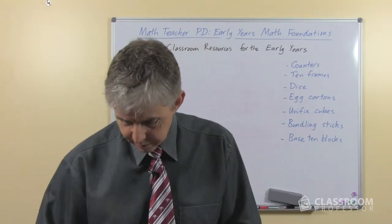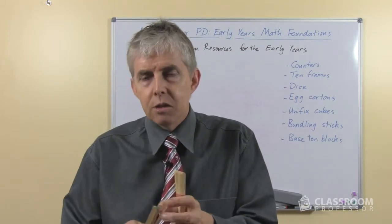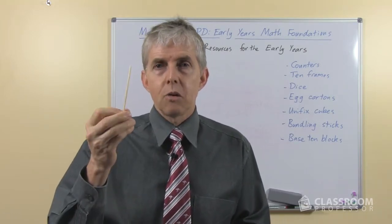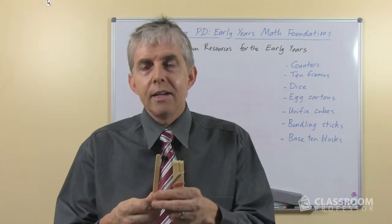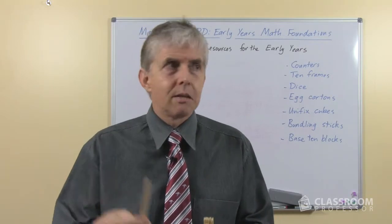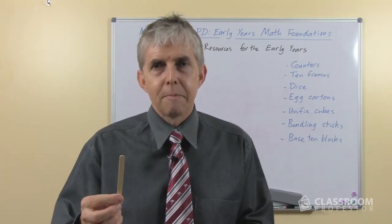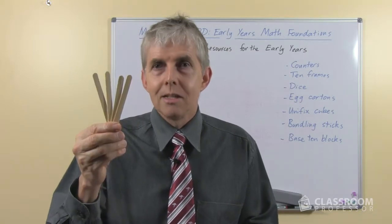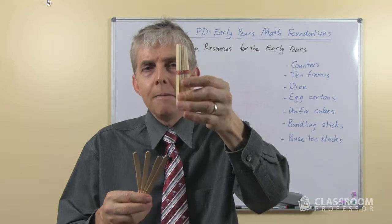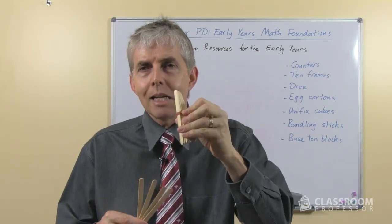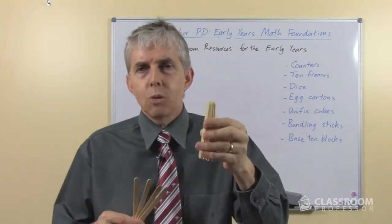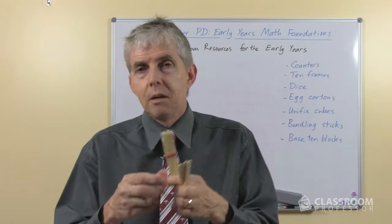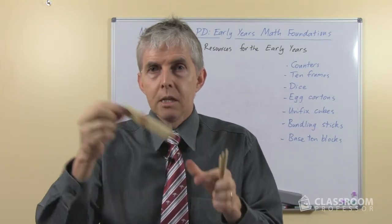Then we move on to bundling sticks. That's the name we use in Australia — I have no idea what you call them in other countries. The sticks themselves are called Paddle Pop Sticks in Australia; I think they're called Pop Sticks in the United States. Whatever you call them, if you can get these, they're a great little resource. This is a bundle of ten wrapped together with an elastic band — it does need to be elastic. I've had students try twist ties and hair elastics, but basically it needs to be a rubber band to hold it firmly so when you pick it up the sticks don't fall out.